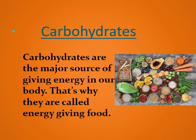Carbohydrates are the major source of energy in our body, which is why they are called energy-giving food. They are made up of carbon, hydrogen, and oxygen. Sugars and starch are the types of carbohydrates — they are nutrients that give us quick energy. Sugars provide energy immediately, while starch releases energy more slowly than sugars.